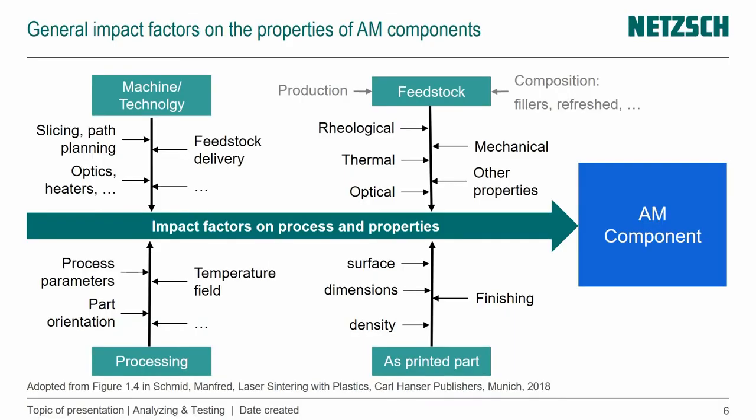We also have the finishing. If the surface is very rough, do we actually polish it? That has an effect on the AM component. If we use it unpolished and it is rougher, then we get stress concentrations on the surface. If we smooth that with whatever technology, we get rid of those, but obviously the part becomes more expensive. And for components printed with binder jetting, we could also have a coating and infiltration process afterwards that obviously has an effect on the component.